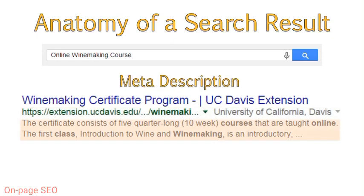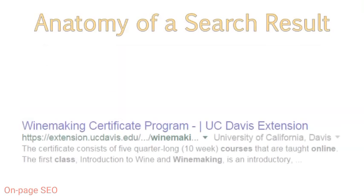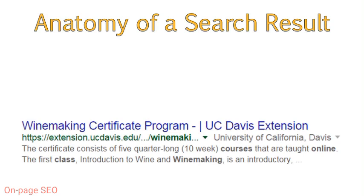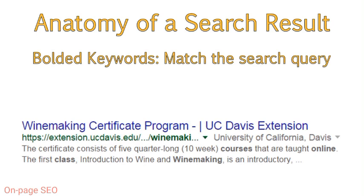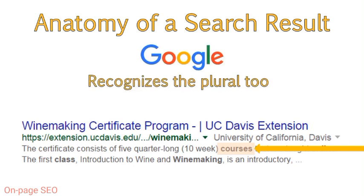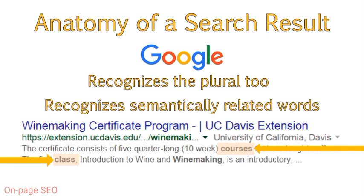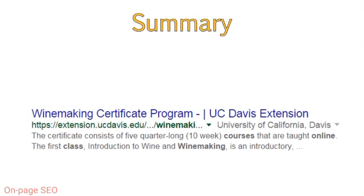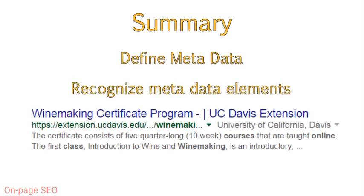The text underneath is the meta description, which is a block of text describing the content you will find on the page. Note that within the meta description, some words are bolded. These words are bolded because they match the words we used in our search query — these words are what we call keywords. You can see that all keywords do not need to appear together to be bolded. My search for 'online winemaking course' also bolded the word 'courses' because Google can recognize the plural version, as well as 'online' and 'winemaking.' Google also bolded the word 'class' because it recognizes that courses and class are semantically related. When we refer to metadata, we are referring to the various elements that encompass the way the search result is displayed.